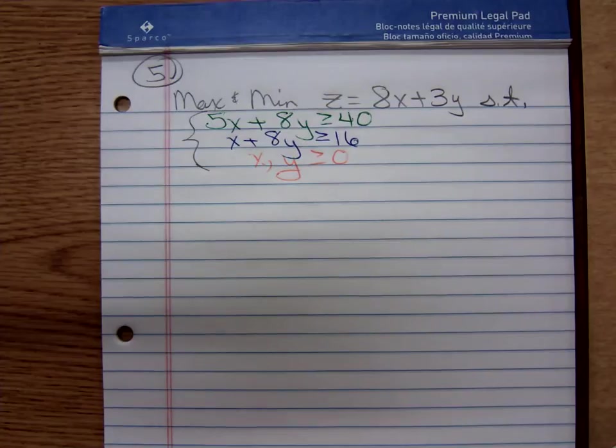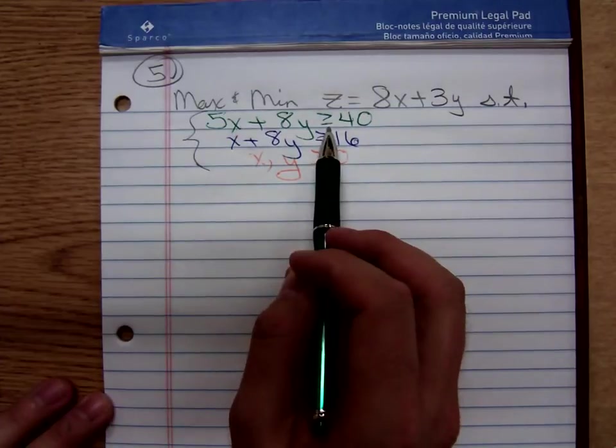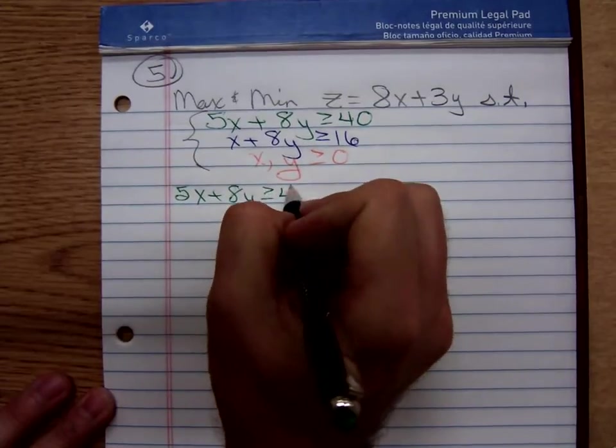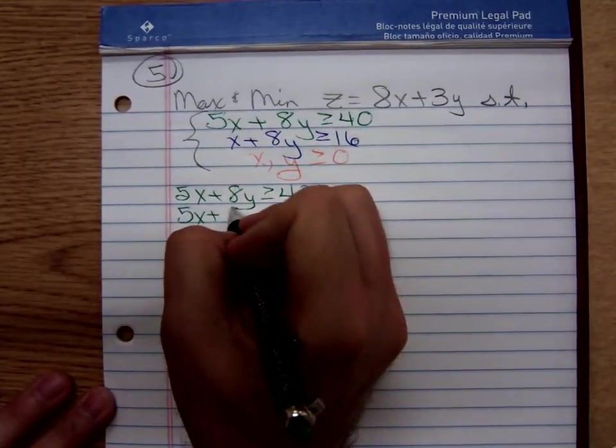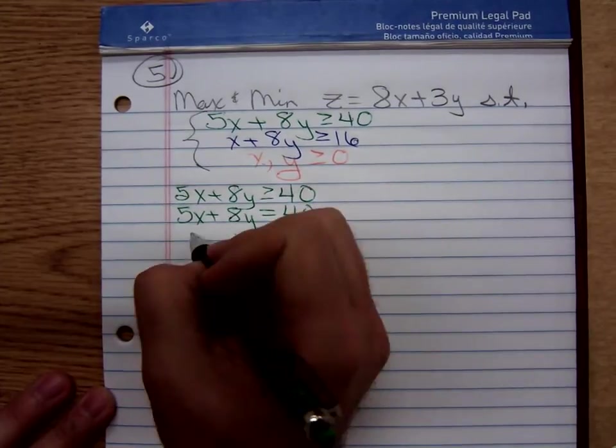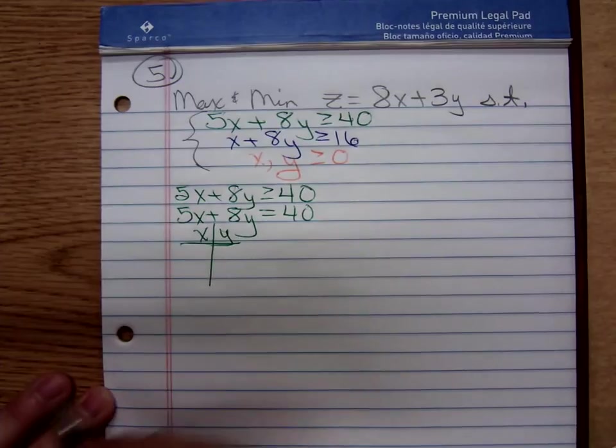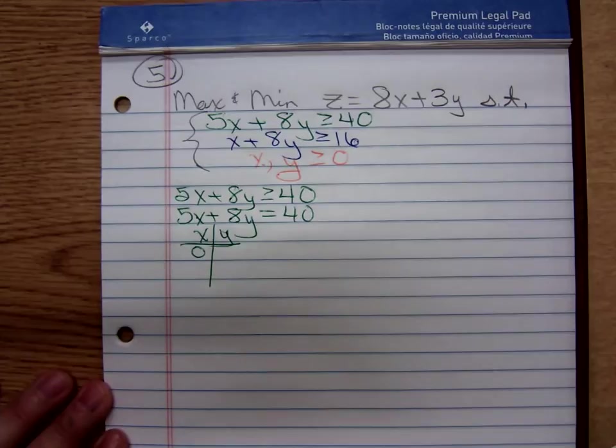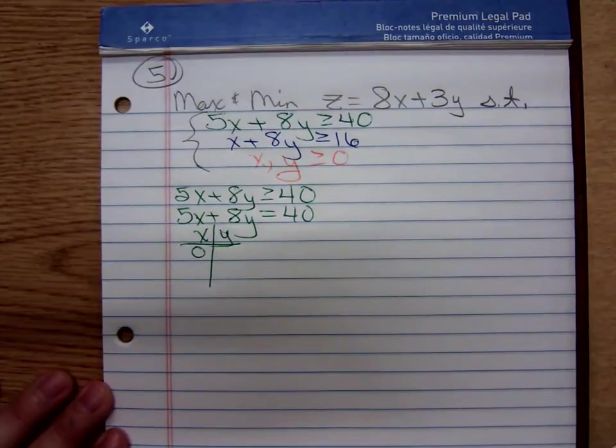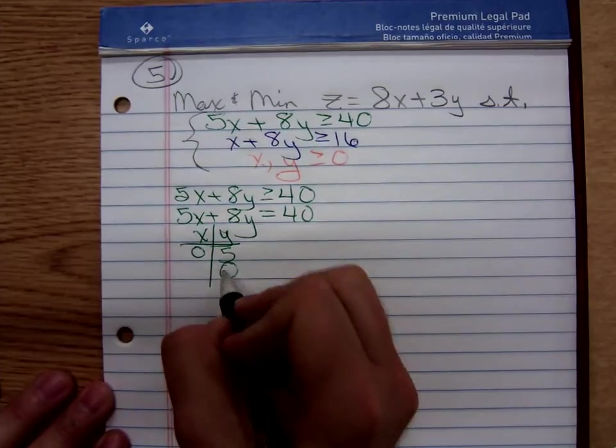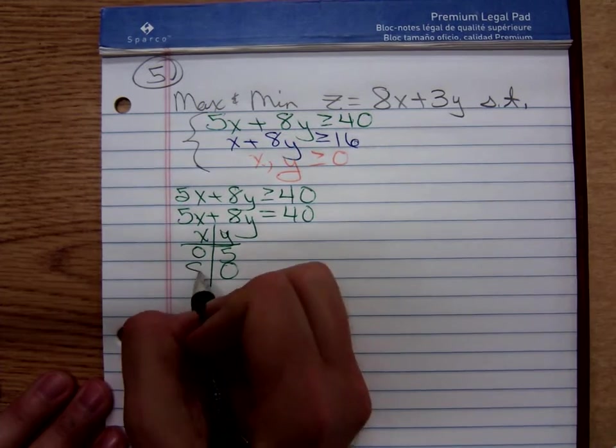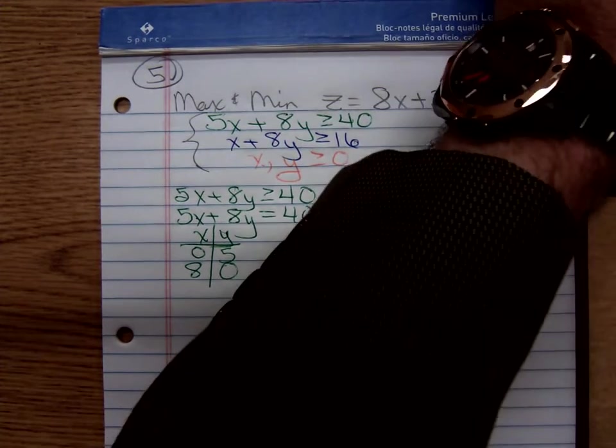First thing I'm going to do, I'm going to draw my boundary line for the inequality 5x plus 8y is greater than or equal to 40. We have to graph the line 5x plus 8y equals 40. If x is 0, what is y equal? 5, okay. If y is 0, x is equal to? 8, I agree.